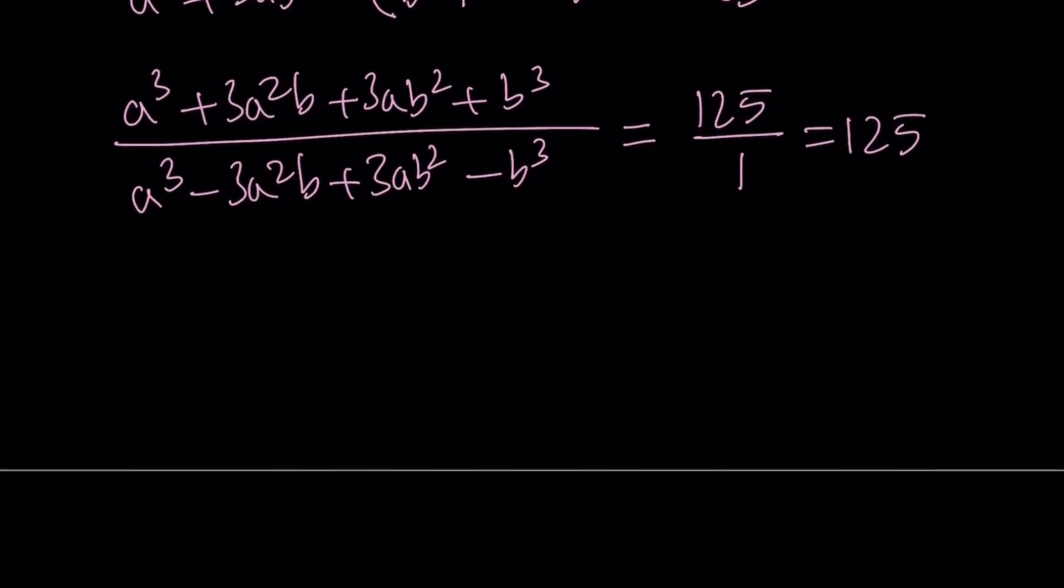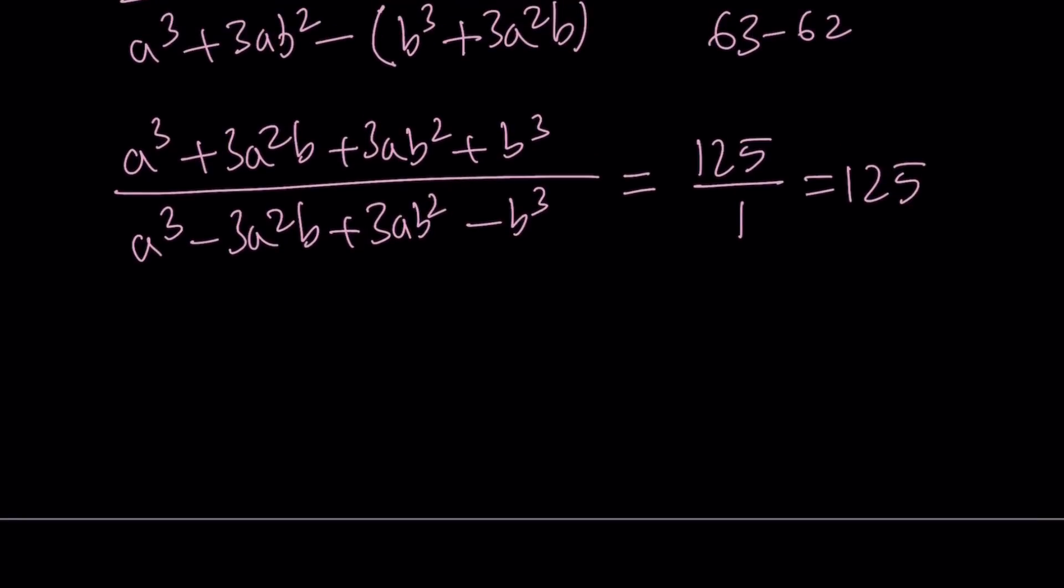Now, what do we have in the numerator? What does that look like? Well, if you are familiar with the binomial theorem, especially for the case n equals 3, then you'll realize that the numerator is equal to a plus b quantity cubed. And the denominator is just a different version of that, of the same thing. If you replace b with negative b, obviously, the odd powers of b is going to become negative. And you're going to get a minus b to the third power. And as we know, this equals 125.